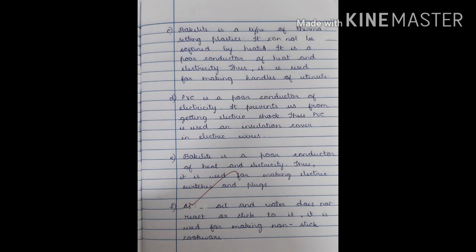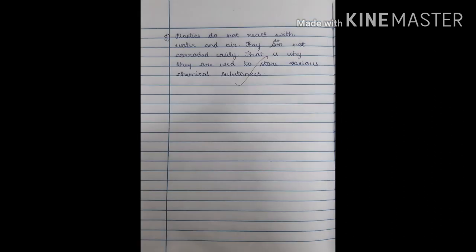Answer E: Bakelite is a poor conductor of heat and electricity, so it is used for making electric switches and plugs. Answer F: As oil and water do not react or stick to Teflon, it is used for making non-stick cookware. Answer G: Plastics do not react with water and air, and they do not corrode easily — that is why they are used to store various chemical substances.